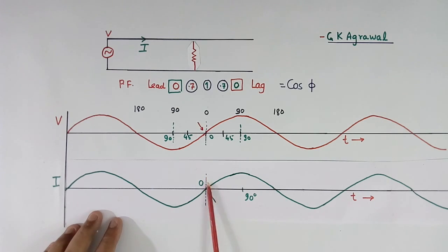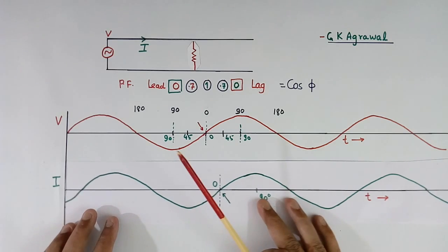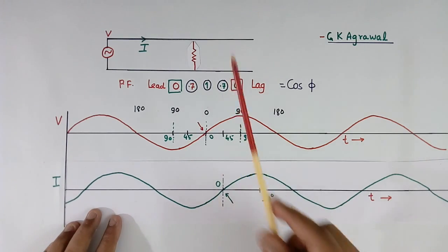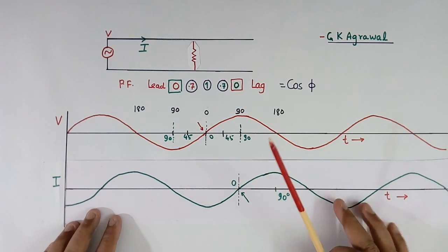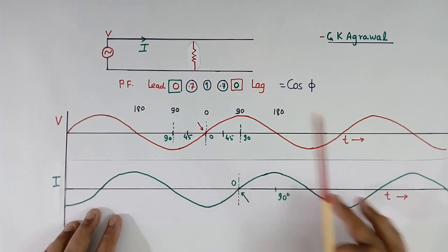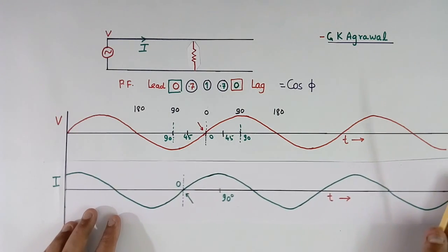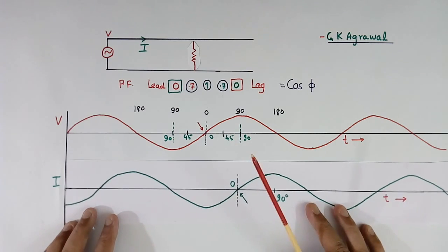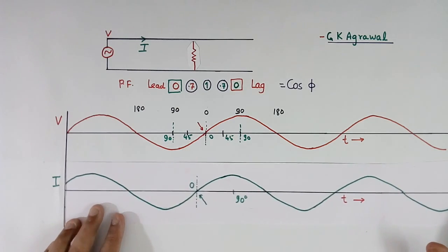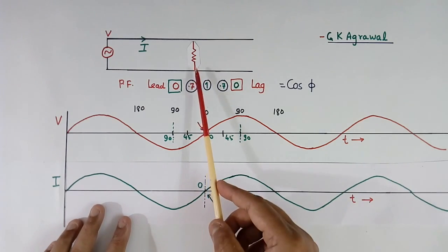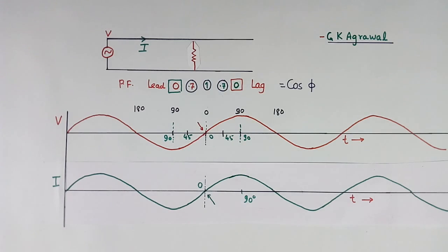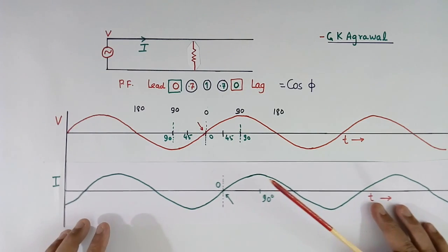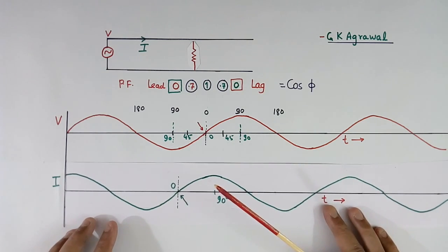Now here, the current zero crossing and voltage zero crossing are matching. If I put an inductor here it will shift; if I put a pure inductor here it will go to 90 degrees lagging. And if it is a pure capacitor, it will go in the other direction. So the zero crossing of current will shift from one side to the other — this side is lagging power factor and this side is leading power factor — depending upon whether a resistor, inductor, or capacitor is present.